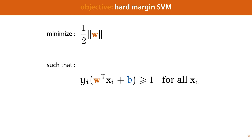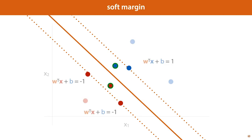The hard margin SVM doesn't work well in two cases: first, when the data is not linearly separable, and second, when we could have a very nice decision boundary if only we ignored a few misclassified points, for instance when there is a little noise or a few outliers. To deal with those problems, we introduce a soft margin, where we allow a few points to be on the wrong side of the margin if it helps us achieve a better fit on the rest — we can trade off a few violations of the constraints against a bigger margin.